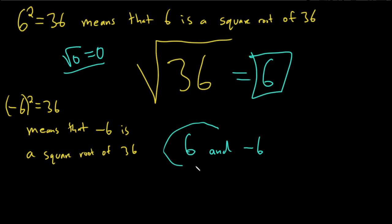Okay, now it is important that we know that 36 has two square roots. That's important, it comes up in math, but whenever you see this symbol by itself with a positive number, you just want the positive square root.